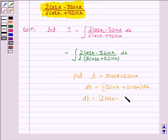That is, dt is equal to 2cosx minus 3sinx dx, and 3cosx plus 2sinx is t.